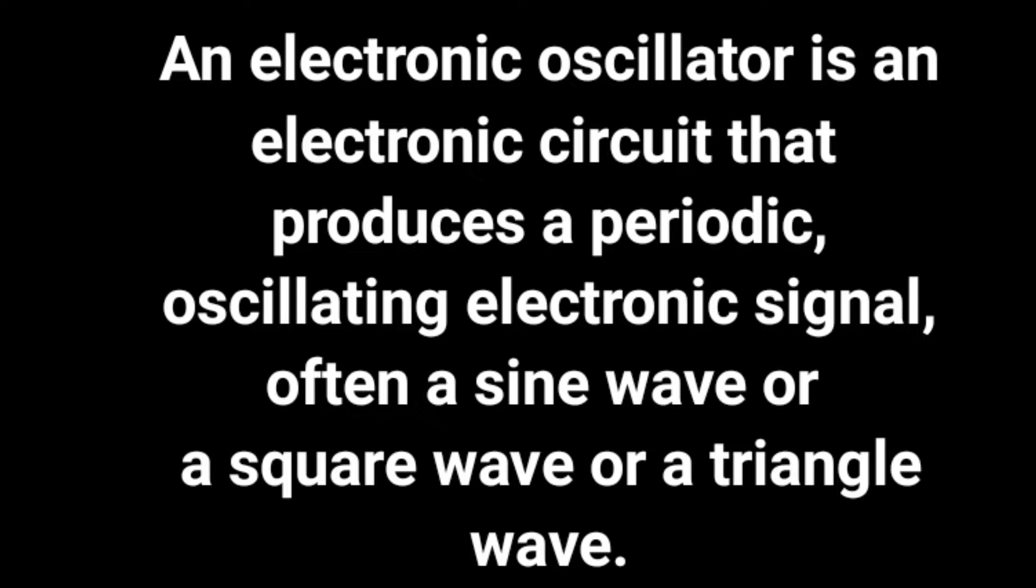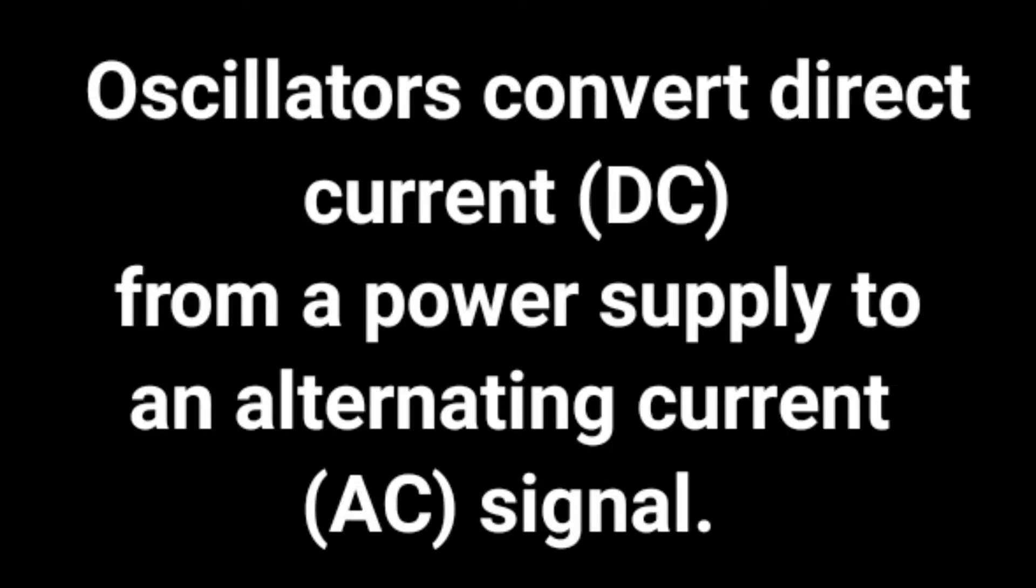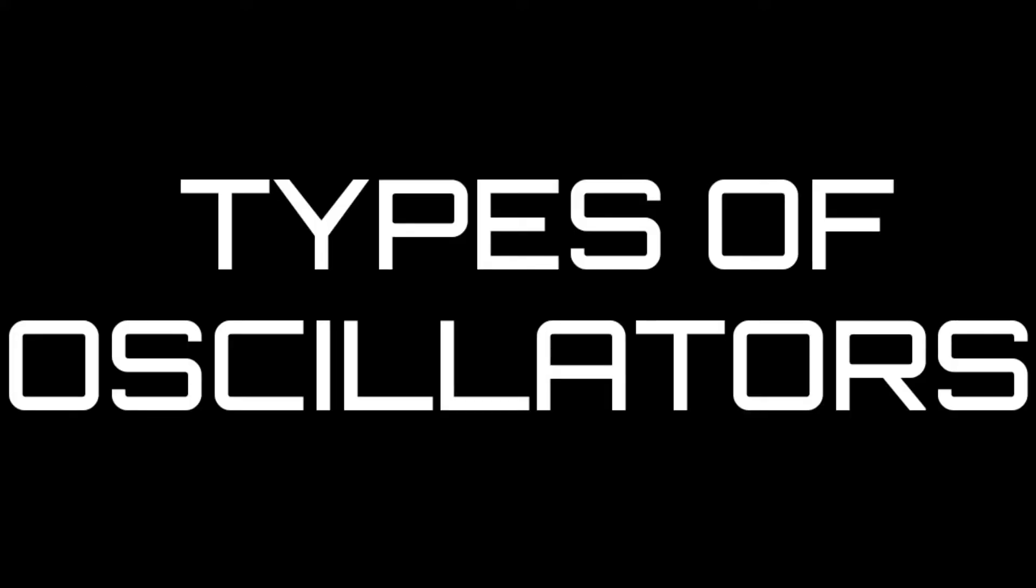The reason why it is called an oscillator is explained in this film. Oscillators actually convert direct current to alternating current, because of that frequencies are generated.